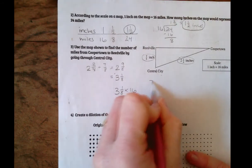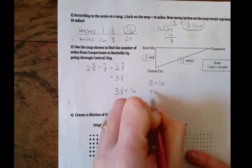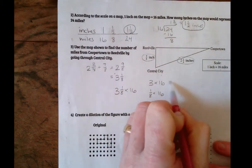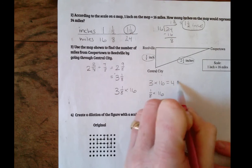So what I like to do is break this up. Three times sixteen and one eighth times sixteen. Three times sixteen is forty-eight.